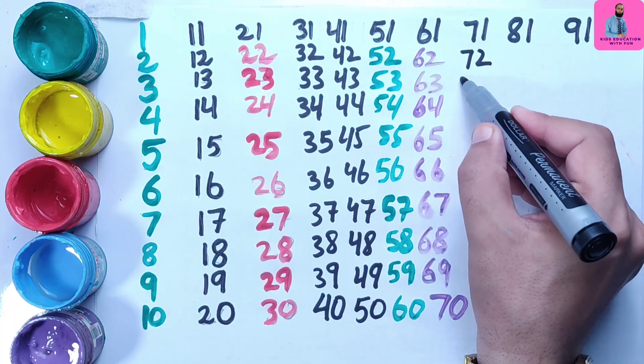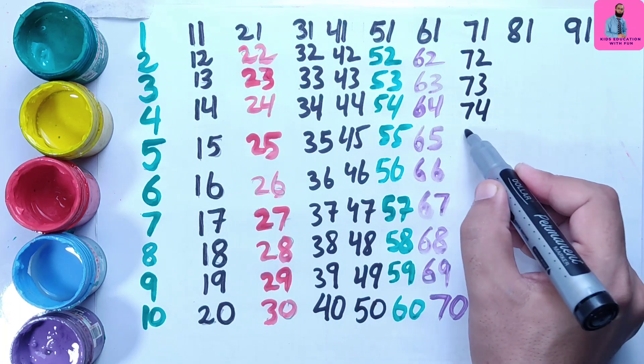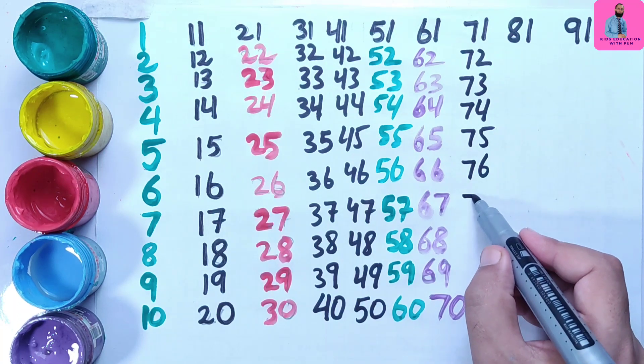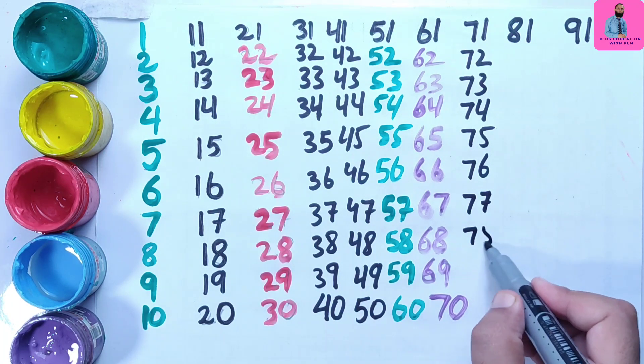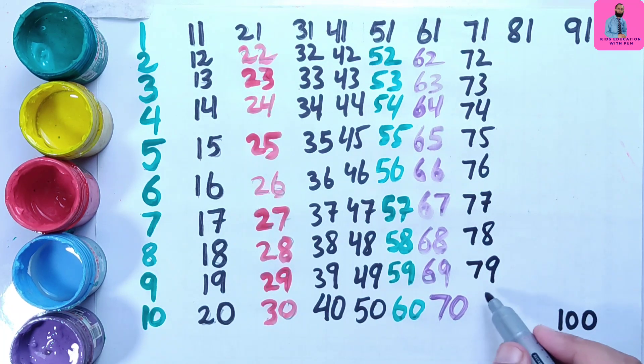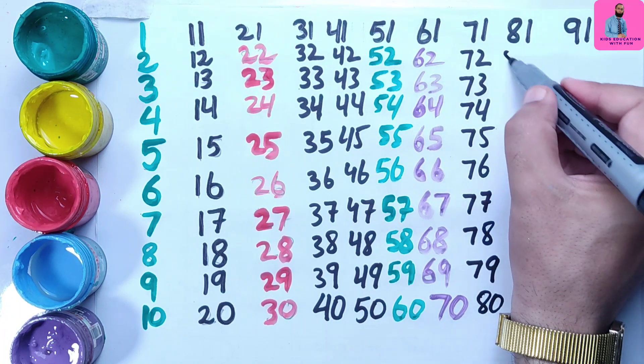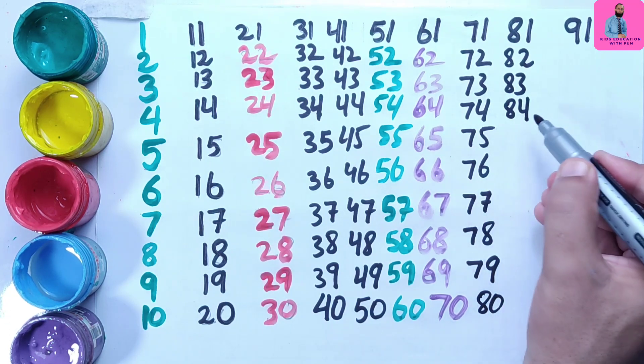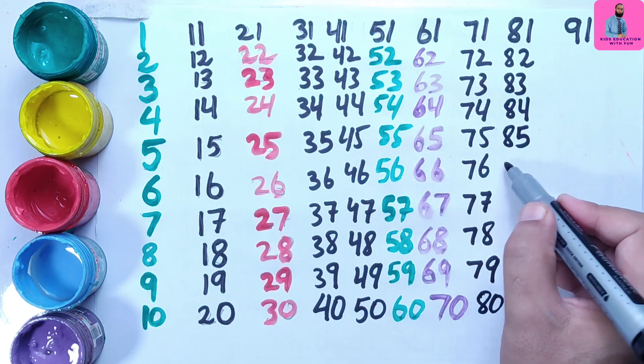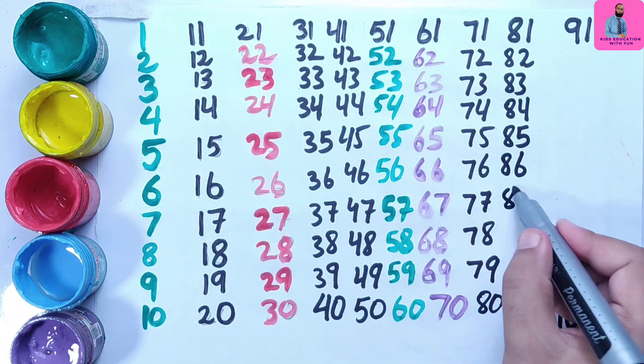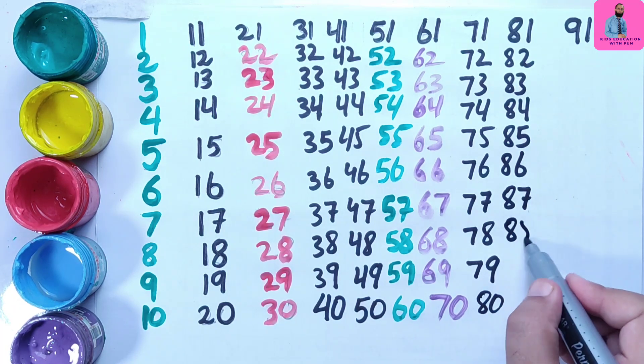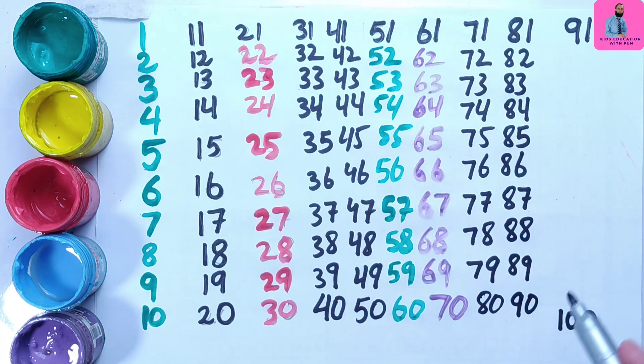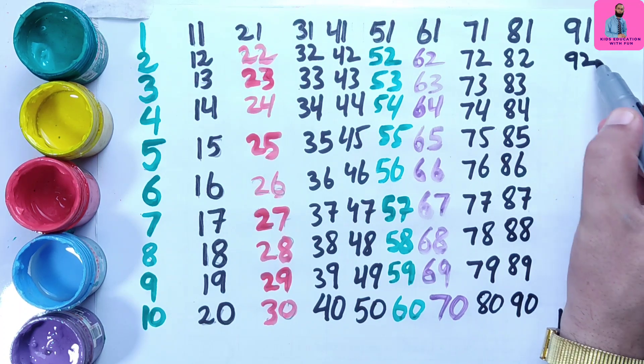71, 72, 73, 74, 75, 76, 77, 78, 79, 80, 81, 82, 83, 84, 85, 86, 87, 88, 89, 90.